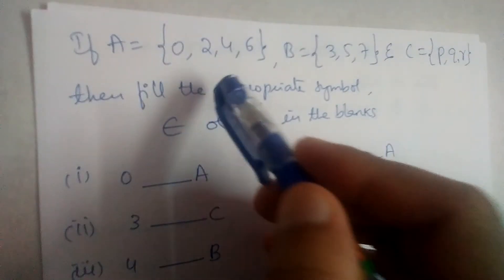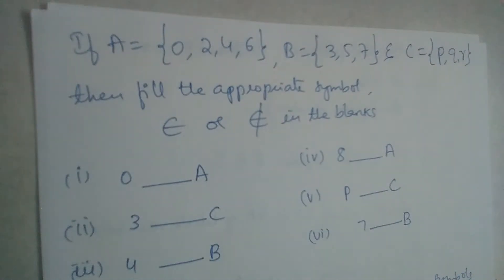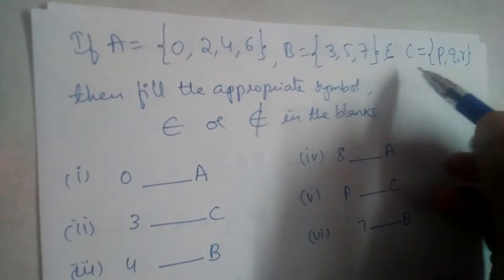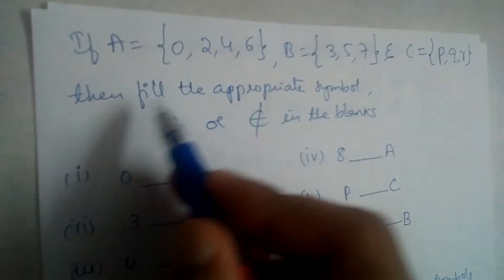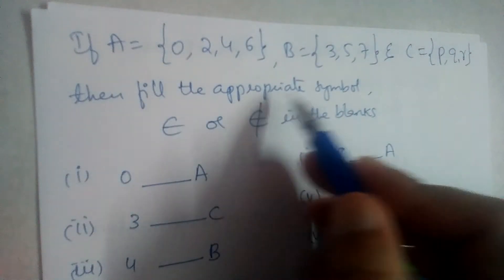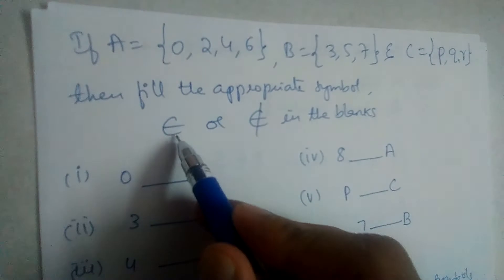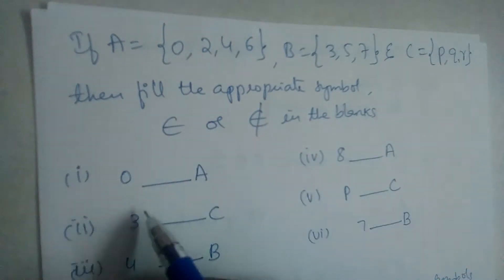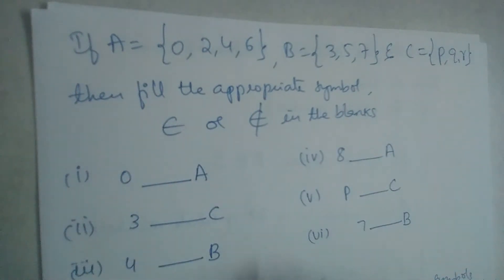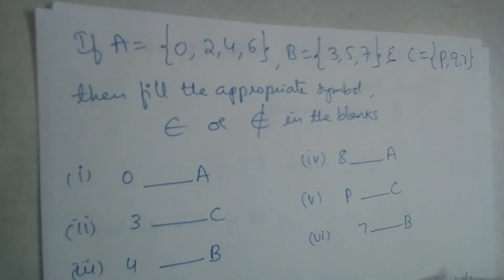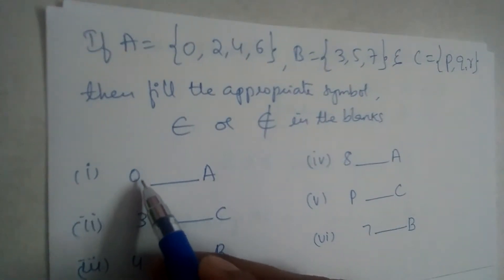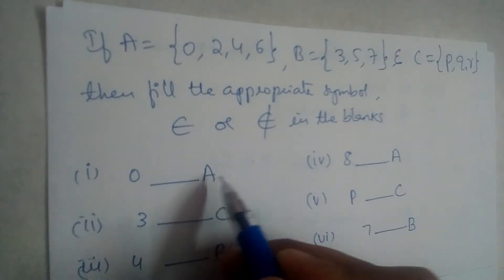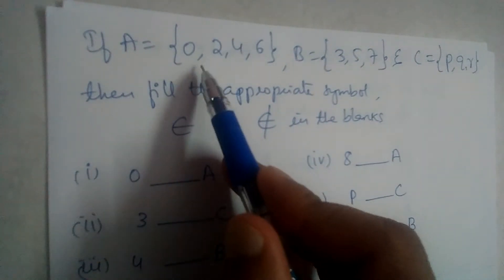If A is equal to {0, 2, 4, 6} and B is equal to {3, 5, 7} and C is equal to {p, q, r}, then fill in the appropriate symbol — belongs to or does not belong to — in the blanks. So first one: does zero belong to A or not?